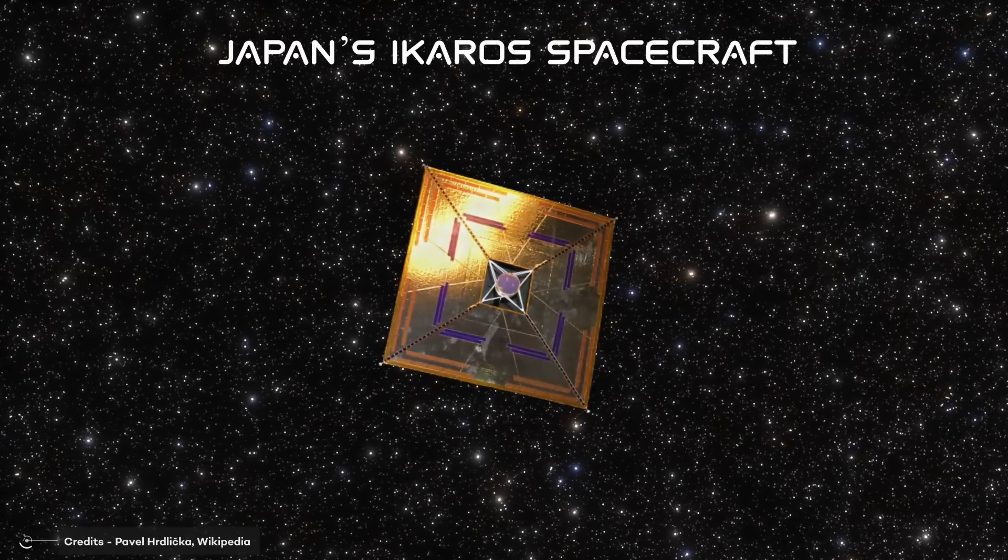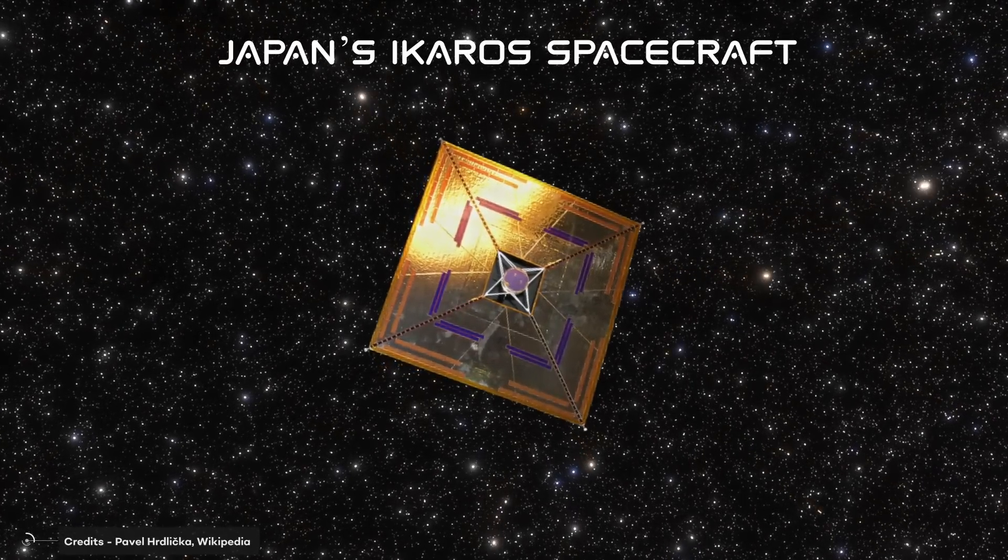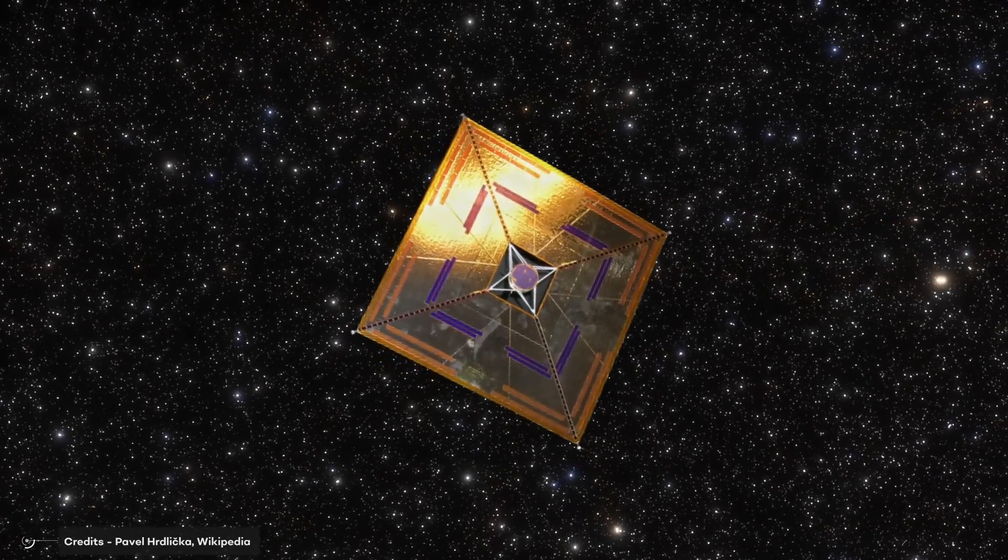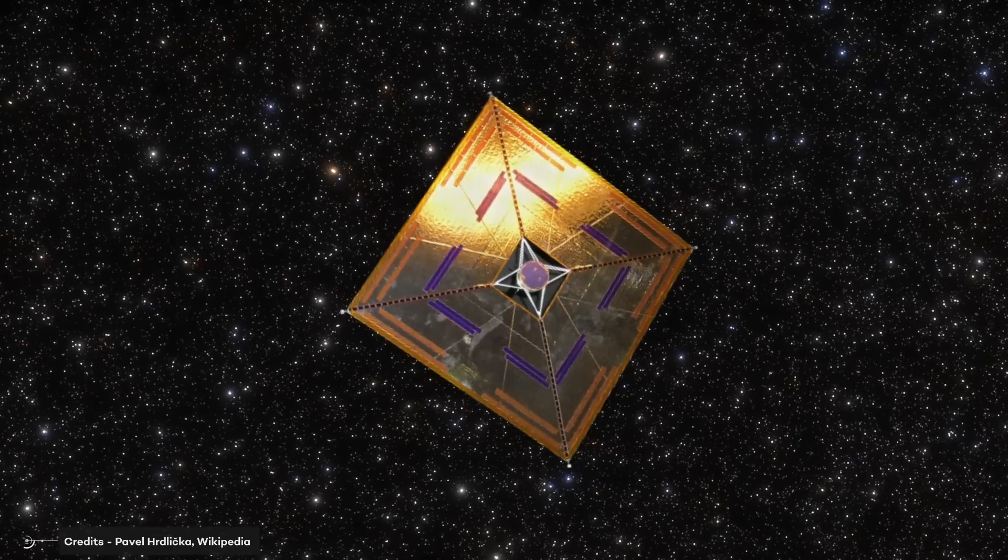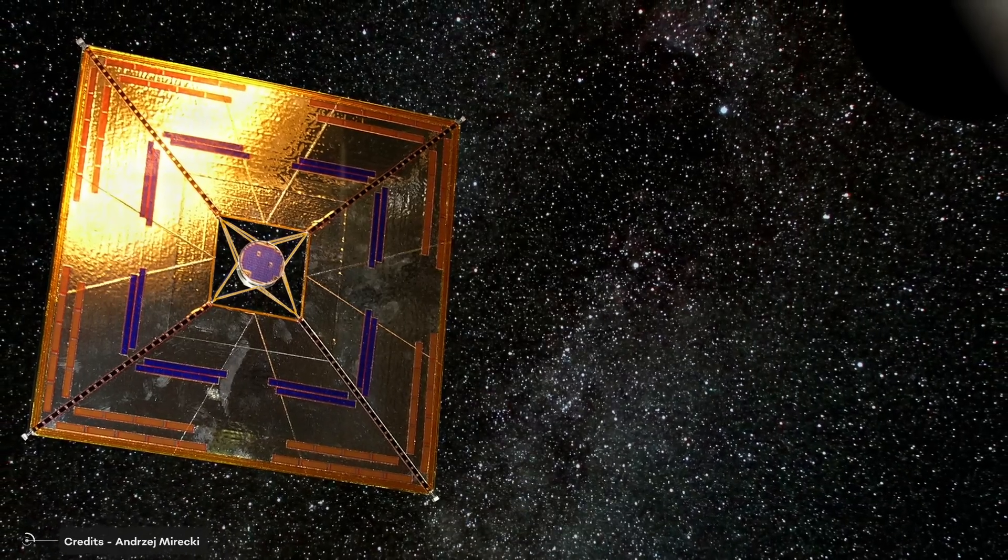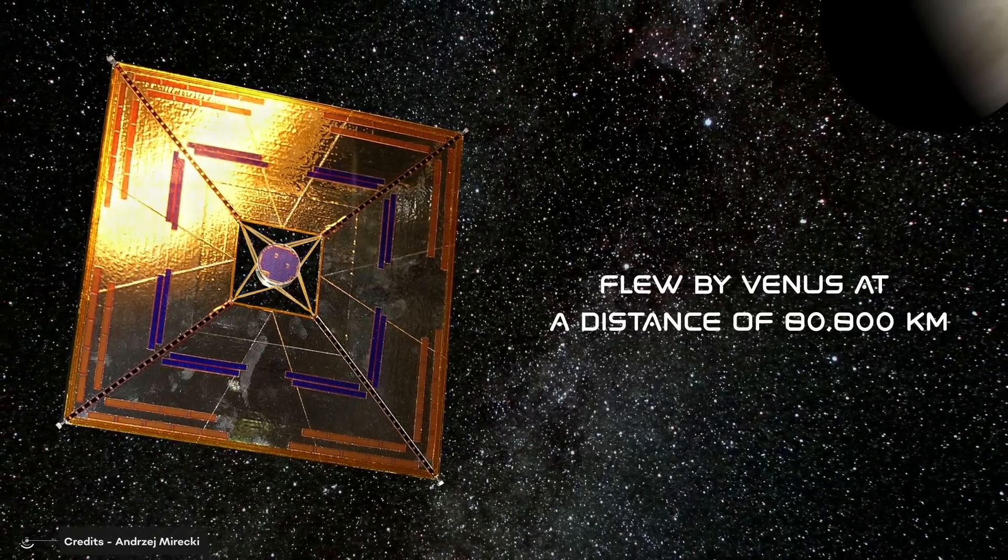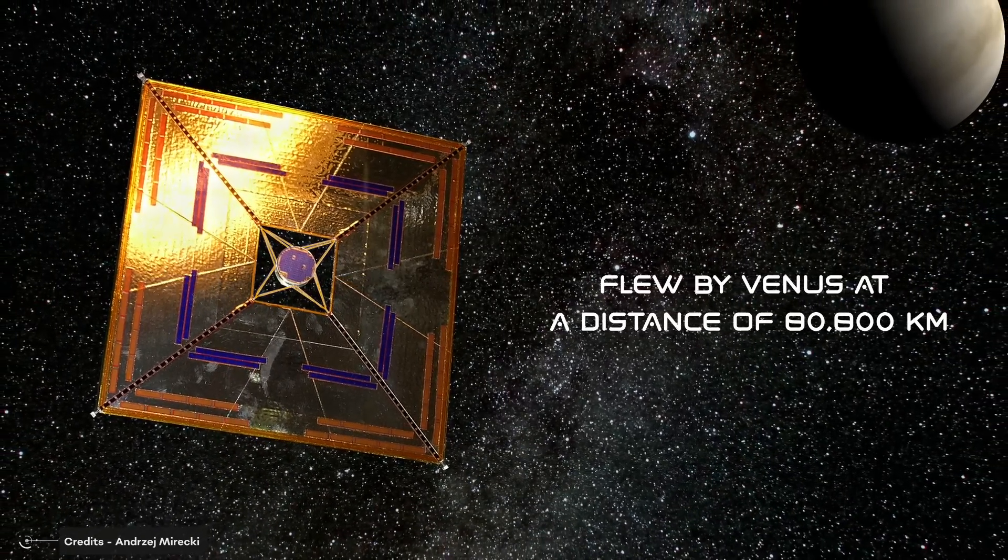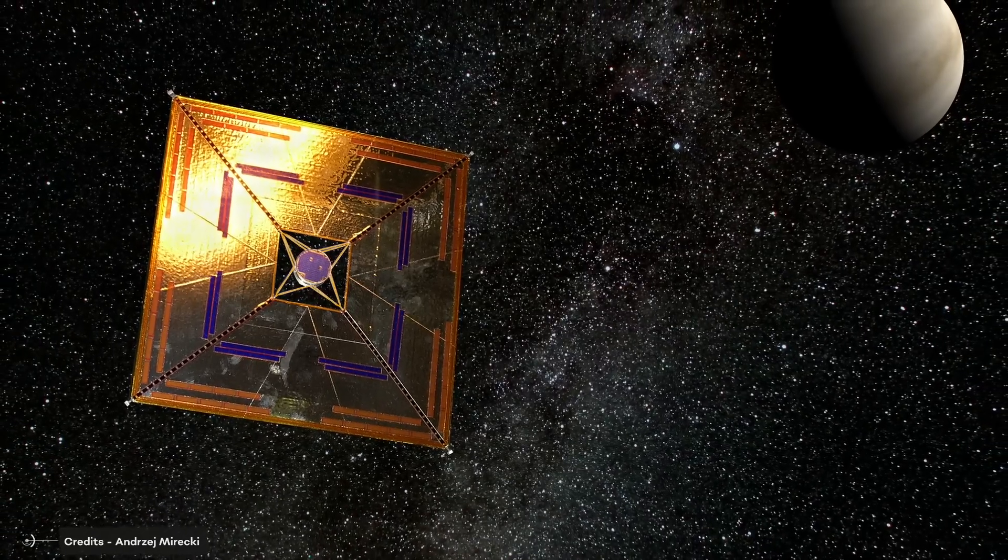Finally, in 2010, Japan's IKAROS spacecraft was the first spacecraft to use controlled solar sailing as its sole method of propulsion. It was a kite solar sail that flew by Venus at a distance of 80,800 kilometers, successfully completing its planned mission.